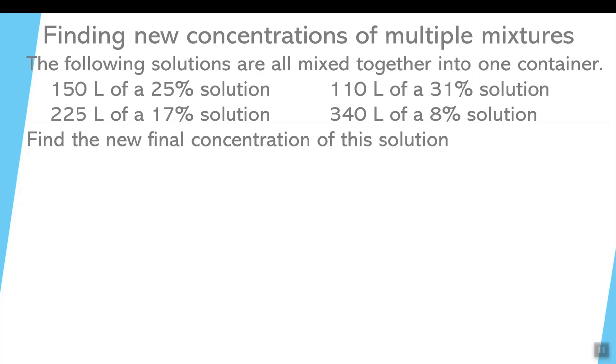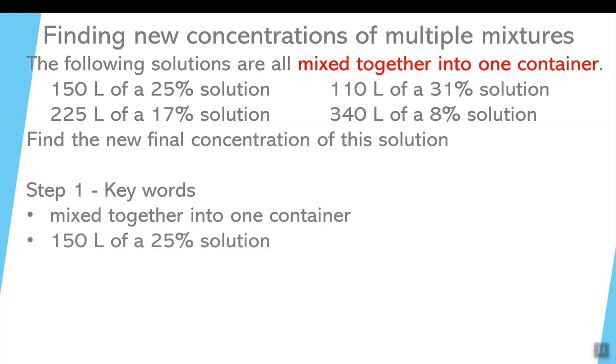Now let's find the new final concentrations. The first step that we look at is the keywords mixed together into one container. So you have all four of these are going to be put together. So that's our first keyword. You're going to have to come out with a new final volume and a new final mass.